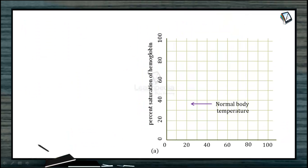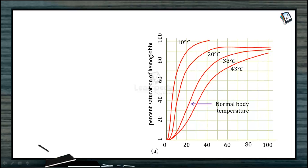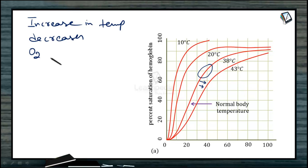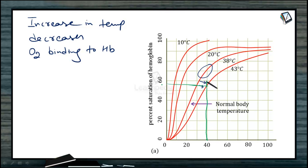Let's examine the pattern of the curve with temperature. There are curves shown at 10°C, 20°C, 38°C, and 43°C. At normal body temperature the curve has a standard shape, but with increasing temperature the curve shifts to the right side, meaning increased temperature decreases oxygen binding affinity to hemoglobin. For example, at a pO2 of 20 mmHg on the higher-temperature curve, saturation is less than 60%, whereas at body temperature it is around 70–72%.